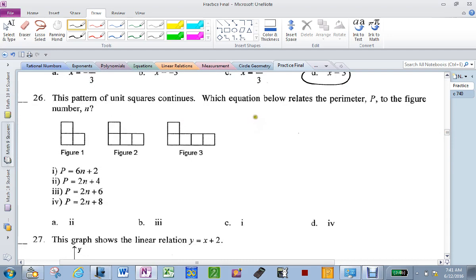This pattern continues. So there's perimeter to figure number. So it's n and p. First figure number has 1, 2, 3, 4, 5, 6, 7, 8. Second one has added 2, so it's really got 10. And just to prove it 1, 2, 3, 4, 5, 6, 7, 8, 9, 10. So you can see it's going up by 2's.